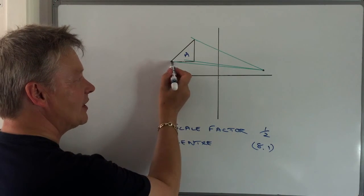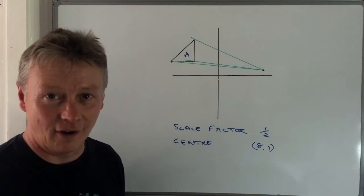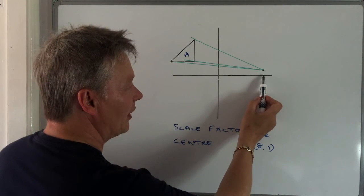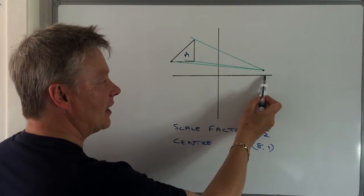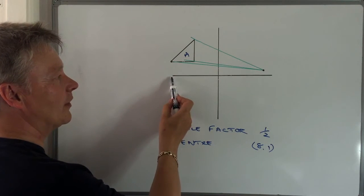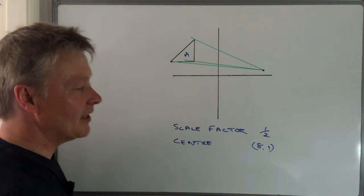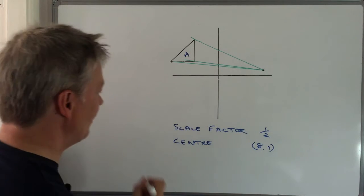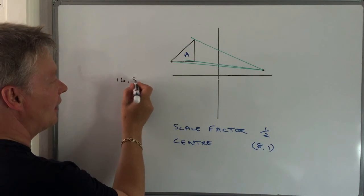So the first thing we do is we say, well, to get to this point here, where have we gone? Well, we've gone along, in this particular case, let's say we've gone along 16 and we've gone up 8. So let's say we've gone along 16 and up 8.